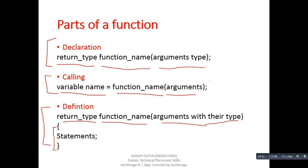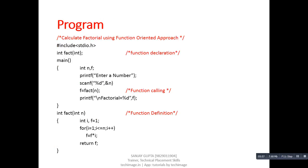In case of user defined functions, the programmer has to implement all three parts in the program. Let's discuss a program so we can better understand the working of a function. This program calculates factorial using a function oriented approach. The function declaration contains all three components: first is int, which is the return type; then fact, which is the name of the function; and in parenthesis, again int, which is the argument type. So this fact function will receive one integer as input and will provide an integer as output.